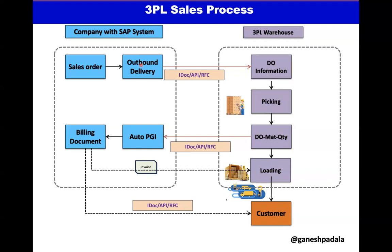The outbound delivery contains the customer name, estimated delivery date, and when the goods will be sent — all information is stored in the outbound delivery. Many companies create the outbound delivery once they plan for sending, and based on the date they plan and execute. Once the outbound delivery is created, the delivery date, quantity, material, and customer information will be sent to the 3PL.